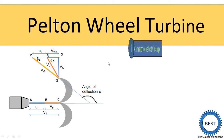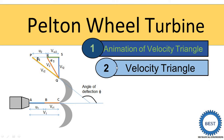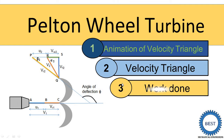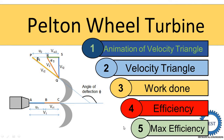We are going to cover the following sequence: first, the animation of velocity triangles — how to draw velocity triangles and some tricks. Second is also velocity triangles. Third is how to find out the equation of work done, then the equation of efficiency, and lastly — most important — maximum efficiency for a Pelton wheel turbine.